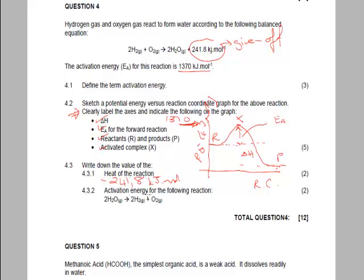So that there is the heat of the reaction. Now it wants activation energy for the following reaction. Water gives you hydrogen plus oxygen. So what is this? This is actually the reverse reaction. So therefore, the activation energy for that is going to be this ΔH, which is 241.8, plus this activation energy, which is 1370. So this is going to be 1370 plus 241.8, which equals 1611.8 kilojoules per mole.